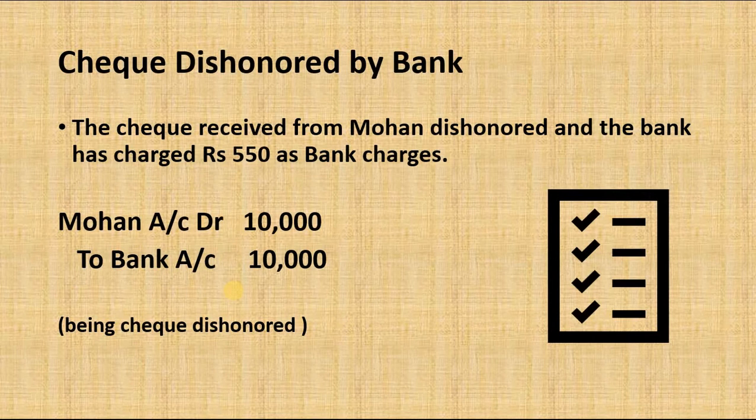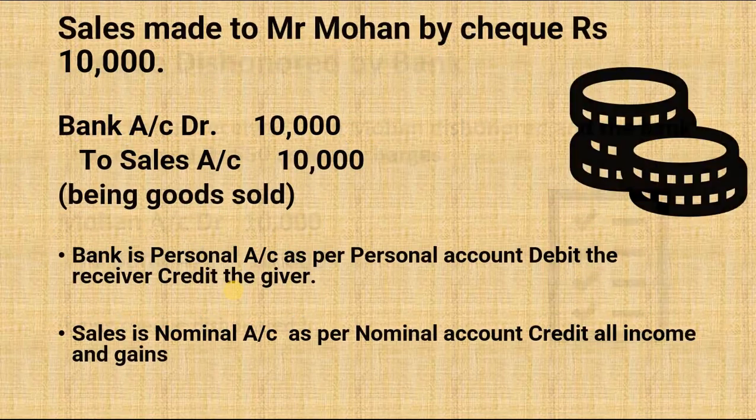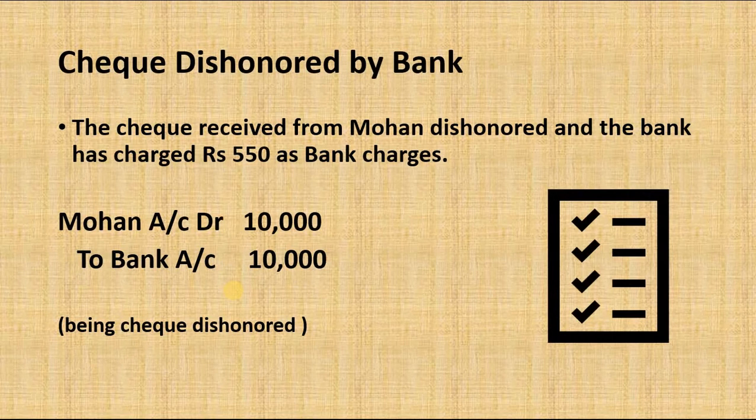Next, the check received from Mohan is dishonored, and the bank has charged Rs. 550 as bank charges. Since the check is dishonored, we will credit our bank account — adjusting and reversing the earlier debit entry. We also open a new account, Mohan account, because now we have to take this money from Mohan. Mohan is a personal account, so we debit it Rs. 10,000, with the narration 'being check dishonored.'